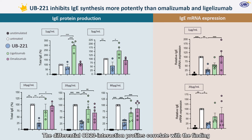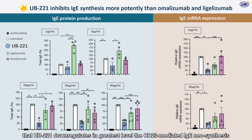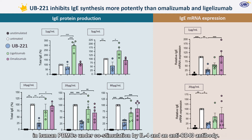The differential CD-23 interaction profiles correlate with the finding that UB221 down-regulates, to the greatest level, CD-23-mediated IgE resynthesis in human PBMCs under co-stimulation by IL-4 and an anti-CD40 antibody.